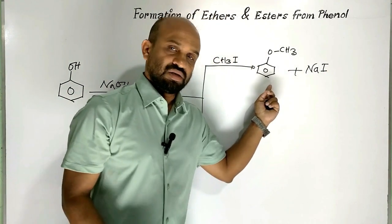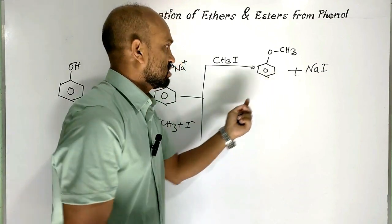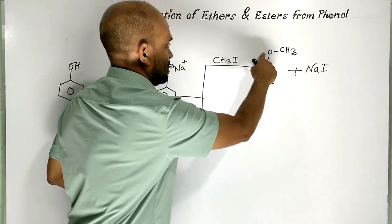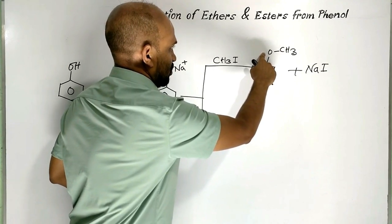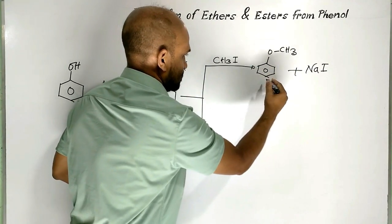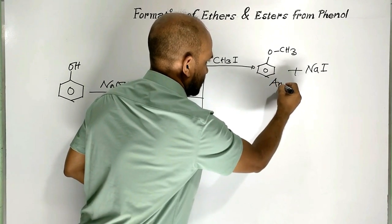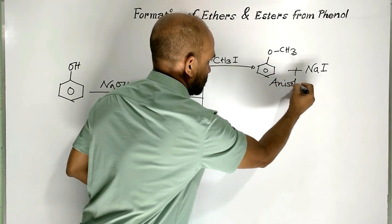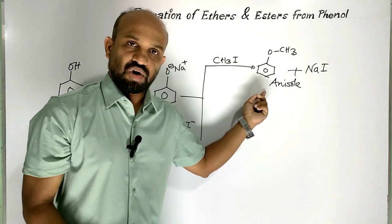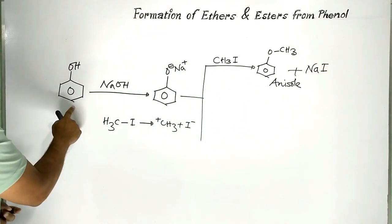This is the ether formed. Its name is methyl phenyl ether or methoxybenzene, also known as anisole. This completes the formation of ether from phenol.